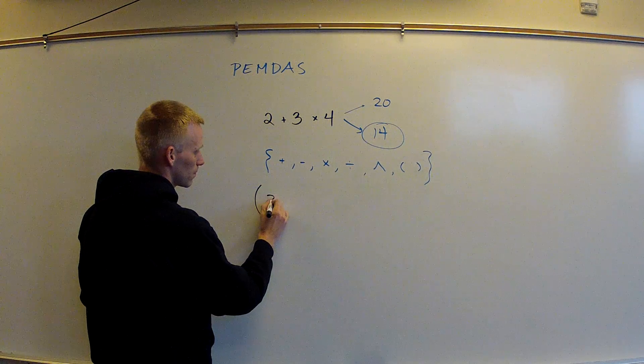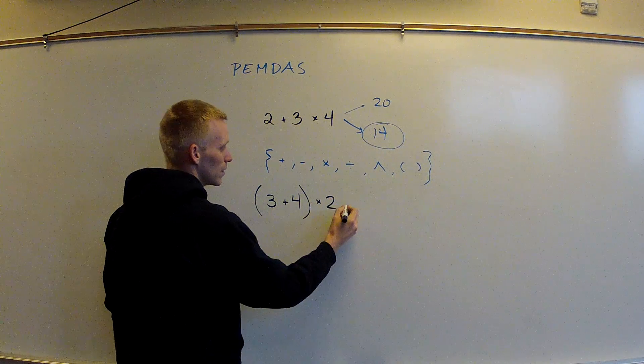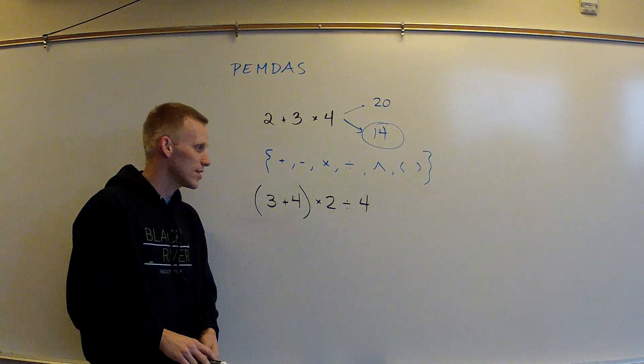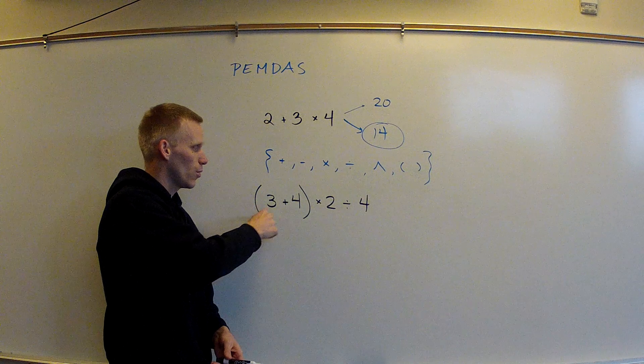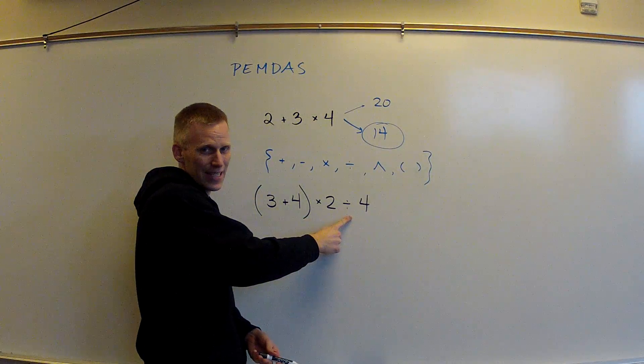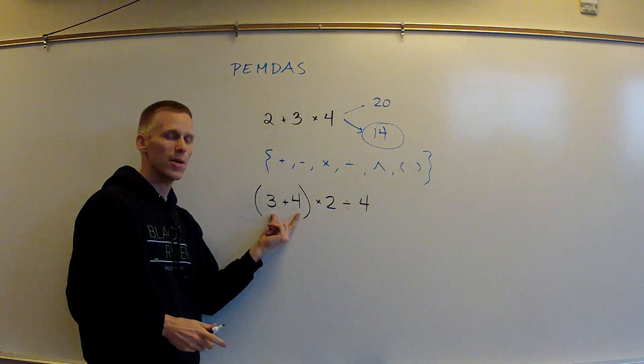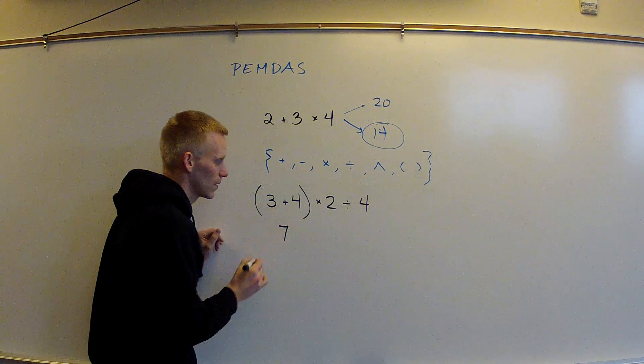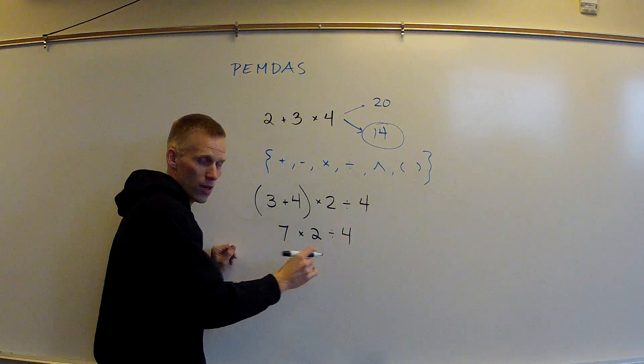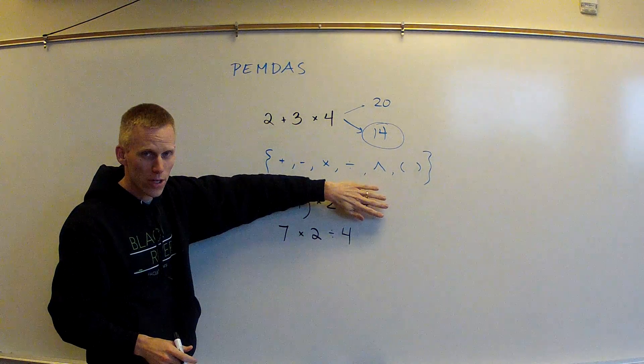We would look at this and we would notice that we basically have four operations. We've got parentheses, we've got addition, we've got multiplication, and we've got division. Now, according to the order of operations, parentheses come first. Three plus four is seven. I haven't touched the times two. I haven't touched the divide by four. The only thing I've done is I've solved what's inside the parentheses. So we've simplified our expression to this.